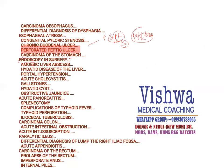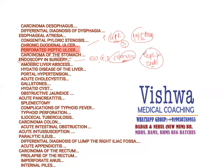Endoscopy in surgery is a very common practical question. We have esophagoscopy, gastroscopy, duodenoscopy, colonoscopy, and also capsule endoscopy. Those are the types of endoscopy we can have in surgery.